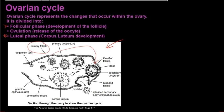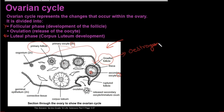The follicle becomes bigger as fluid collects within it, and keeps growing until we have the mature Graafian follicle with the secondary oocyte, which is haploid — so the primary oocyte has undergone meiosis within the follicle. The Graafian follicle is responsible for the secretion of estrogen.